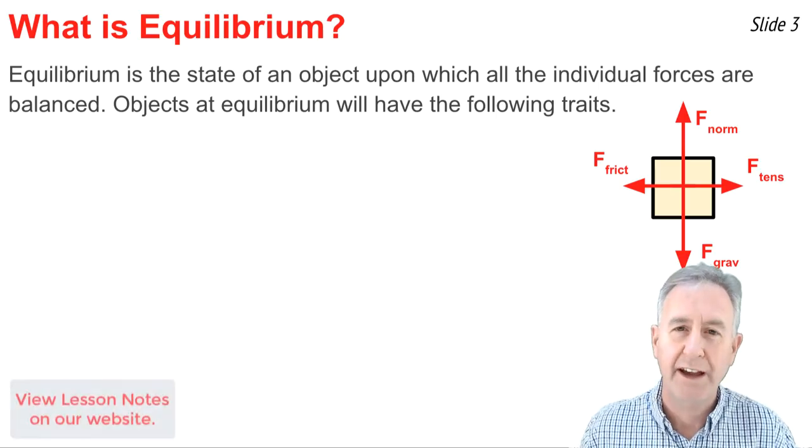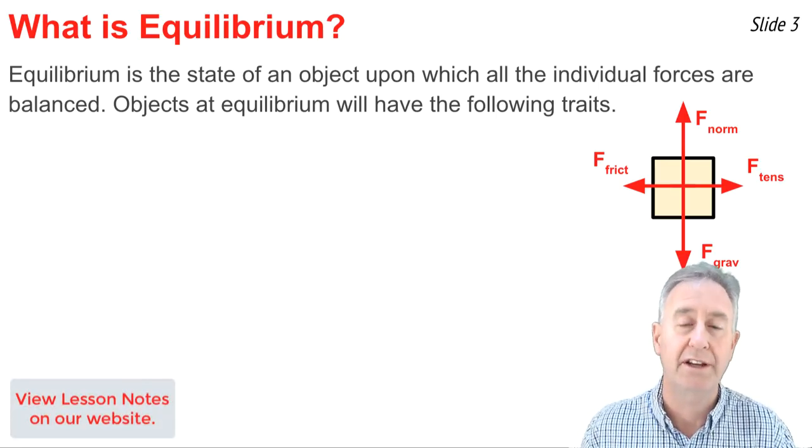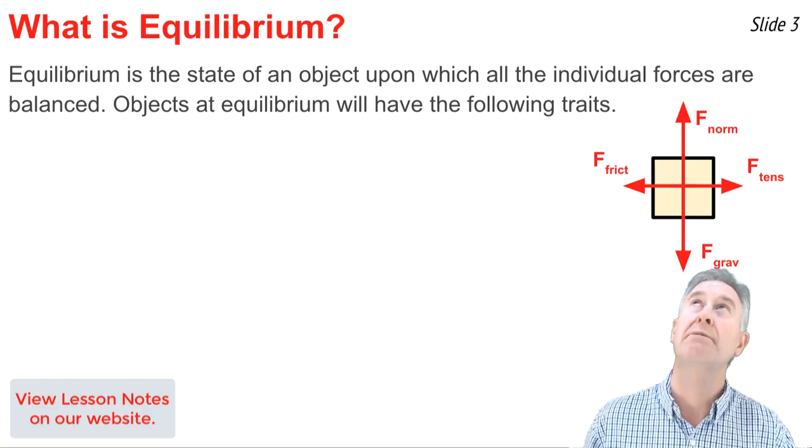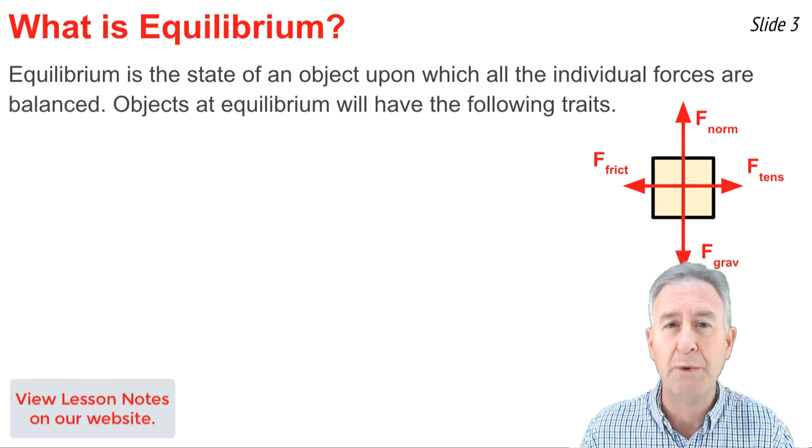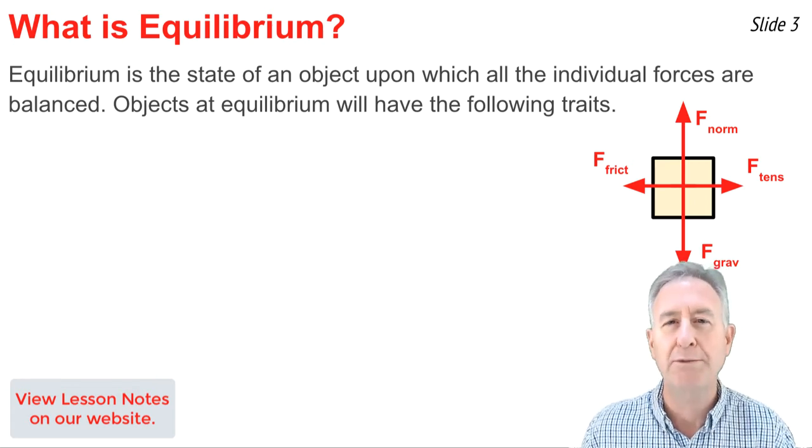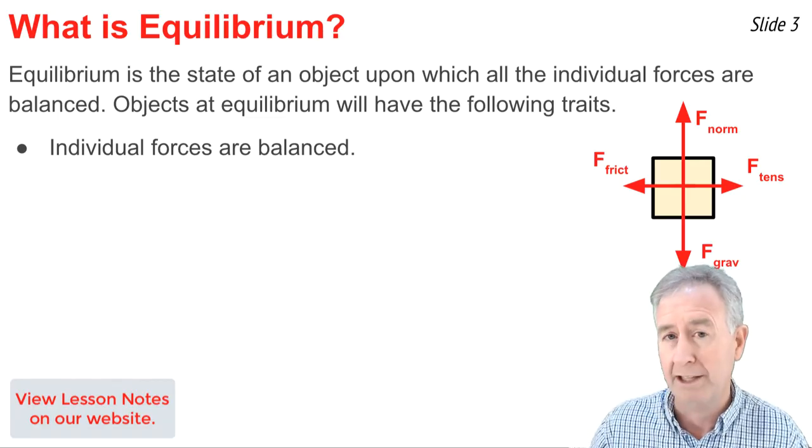When all the individual forces that act upon an object are balanced, we say that that object is in a state of equilibrium. If you notice the free-body diagram above me, the up force and the down force appear to be balanced, and so do the right and the left force. Whenever an object is at equilibrium, we expect the following traits. First of all, by definition, the forces are balanced.